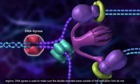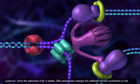DNA gyrase is used to make sure the double-stranded areas outside of the replication fork do not supercoil.